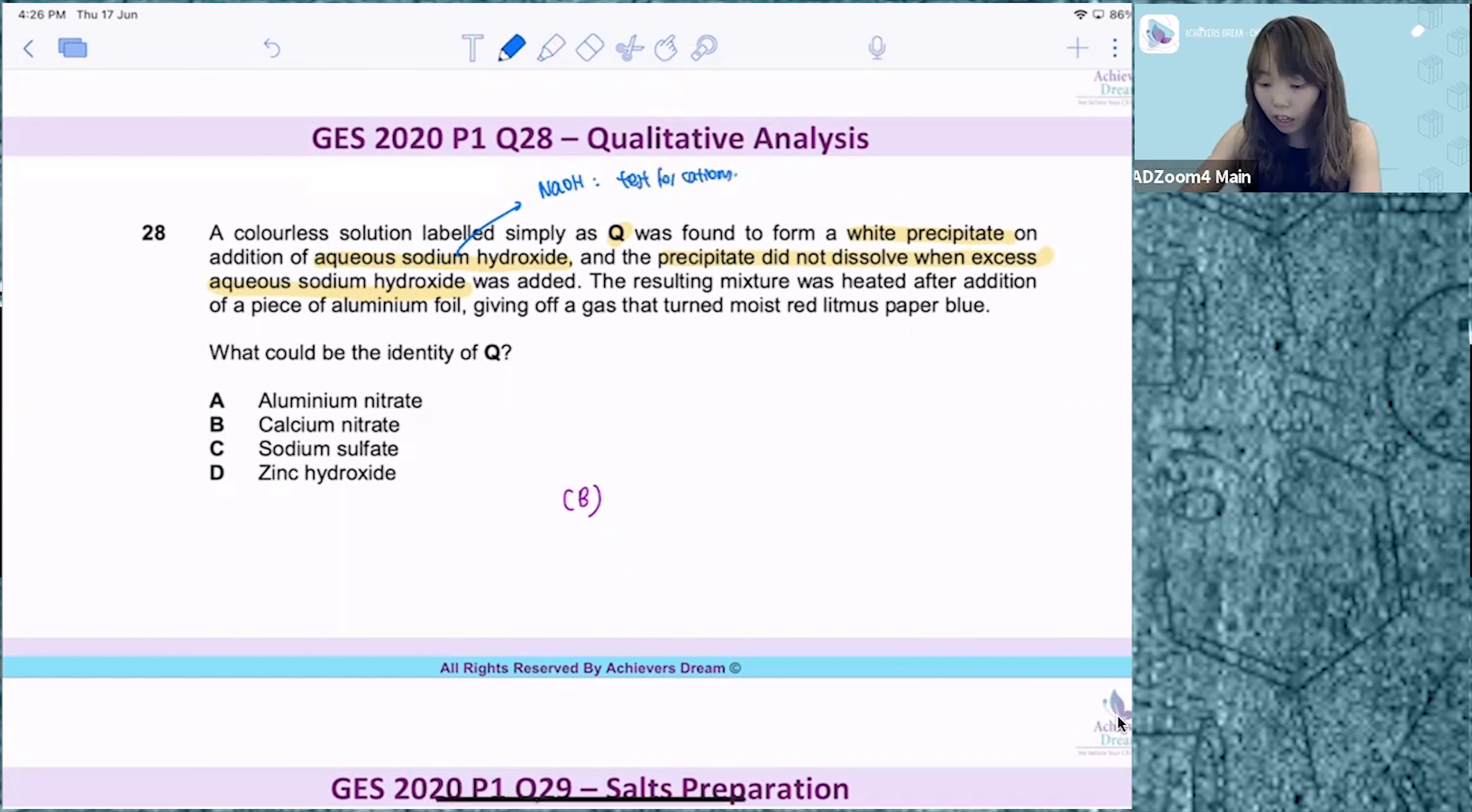Which is the cation that would give you a white PPT that is insoluble in excess NaOH? If you refer to the cation table, the only cation that gives you this observation is Ca2+. Al3+, Na+, Zn2+, it won't give you this observation.